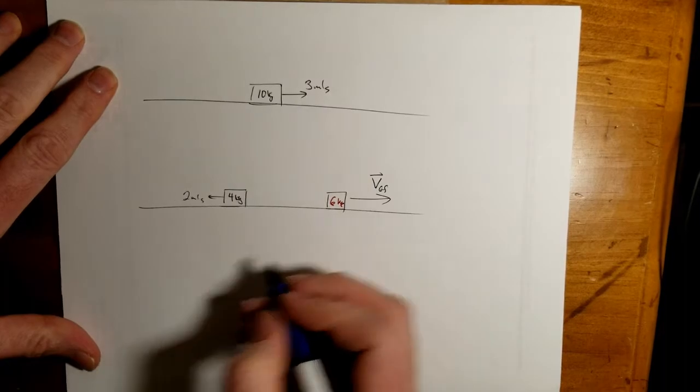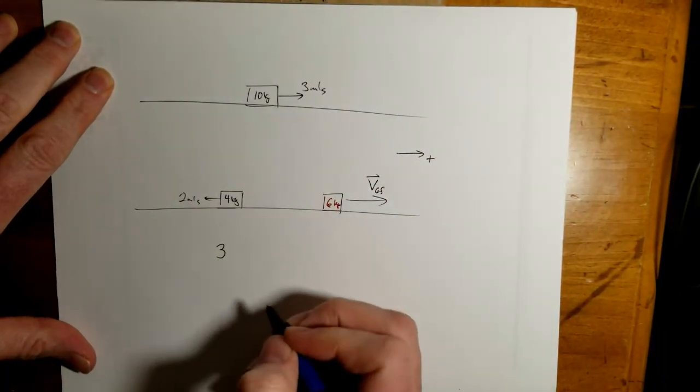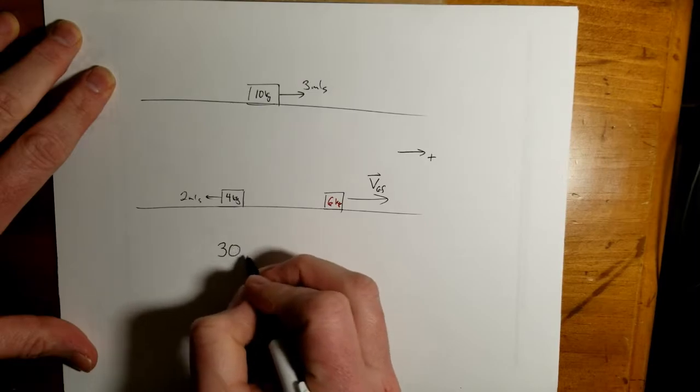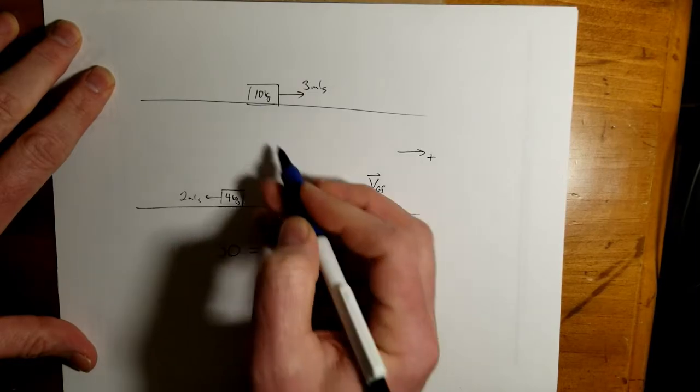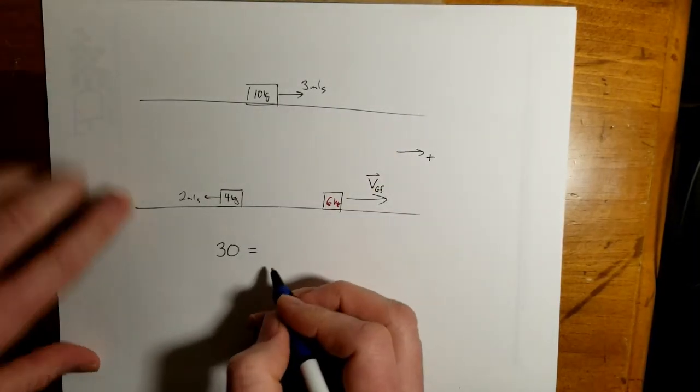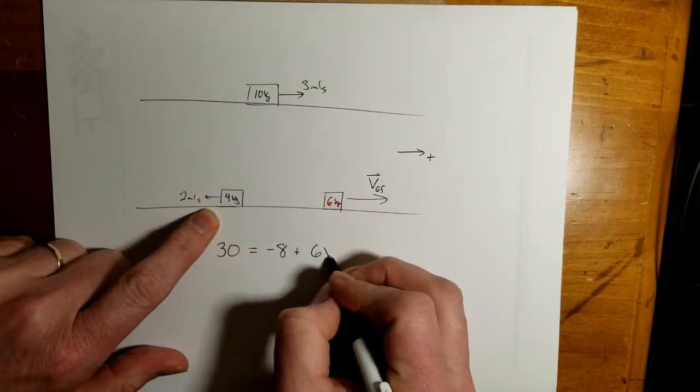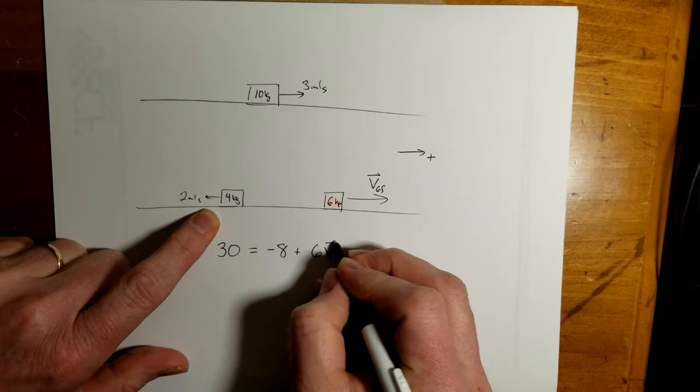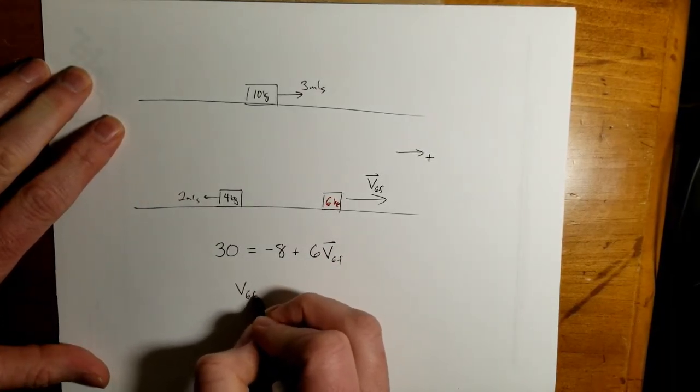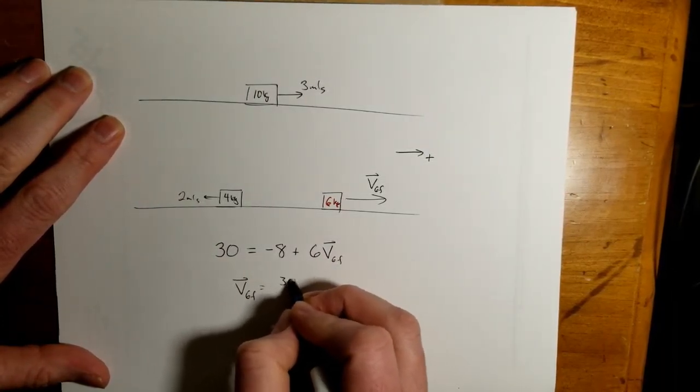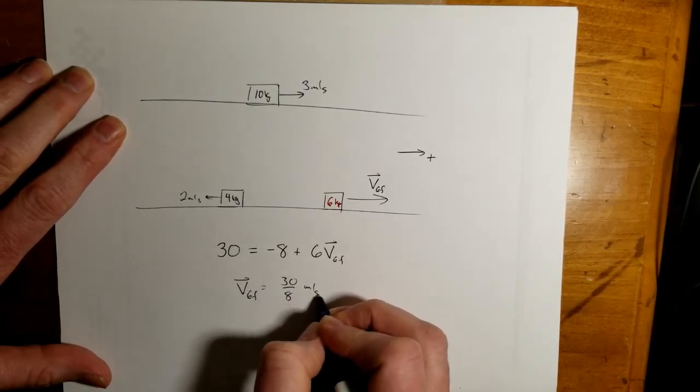And again, it's a one-dimensional problem. Let's just make to the right positive. So my initial momentum is 30 kilogram meters per second. And that's going to be equal to final. Well, this is contributing negative 8 plus 6V6F.